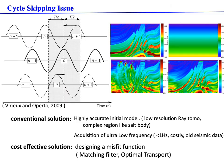Cycle skipping is a critical issue in full waveform inversion. Conventional solutions for solving it use either a highly accurate initial model or ultra-low frequency. This approach has limitations in certain aspects, while a cost-effective solution would be to design a more robust misfit function to allow the model to converge from a relatively far-away initial model.